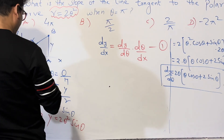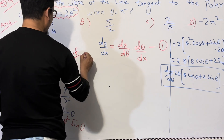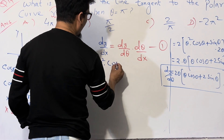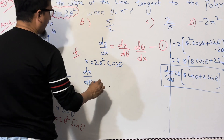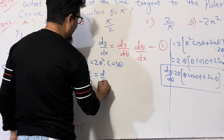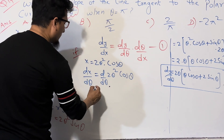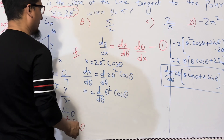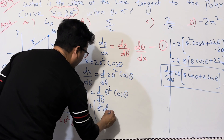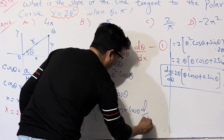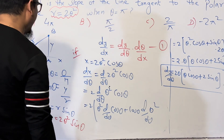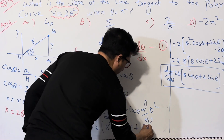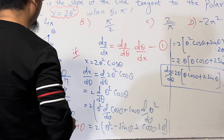Now for x = 2θ² cos θ, we find dx/dθ. Differentiating with respect to θ: dx/dθ = 2 · d/dθ(θ² cos θ). Applying the product rule: 2[θ² · d/dθ(cos θ) + cos θ · d/dθ(θ²)] = 2[θ²(−sin θ) + cos θ · 2θ].